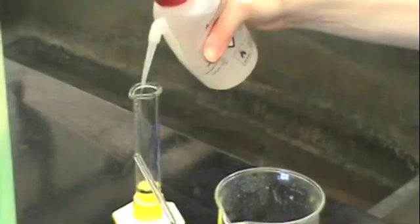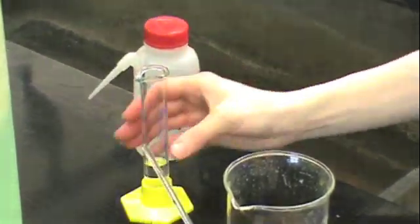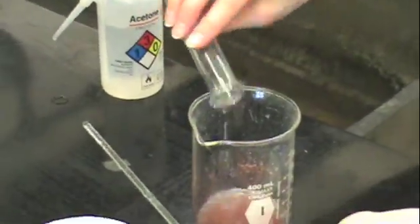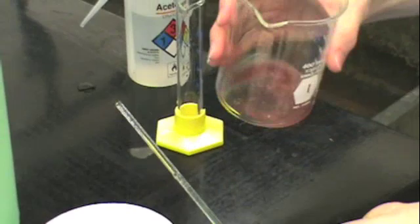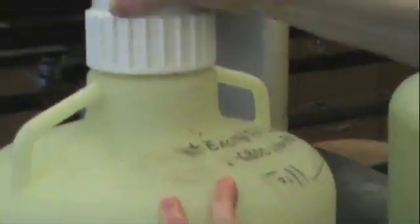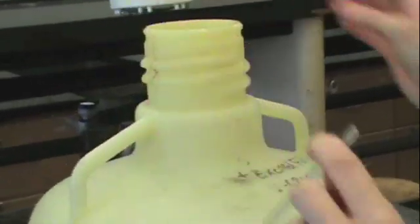Once you've decanted, add 10 milliliters of acetone to your precipitate and swirl gently. This will remove any excess water from your copper precipitate. Then decant the acetone wash into the acetone waste bottle.